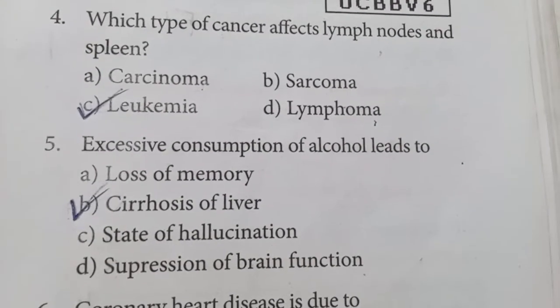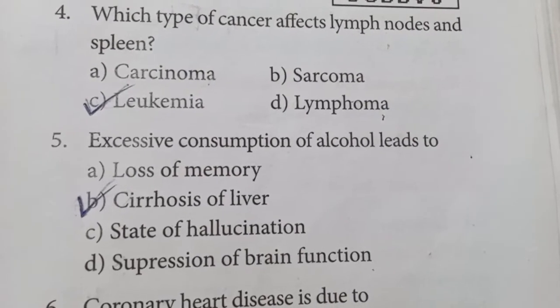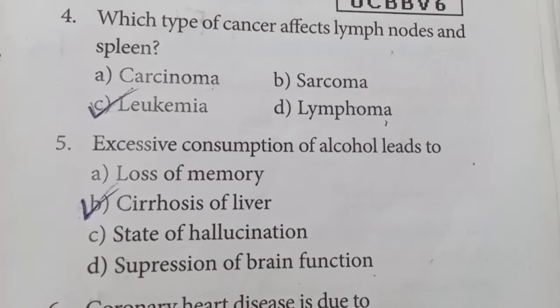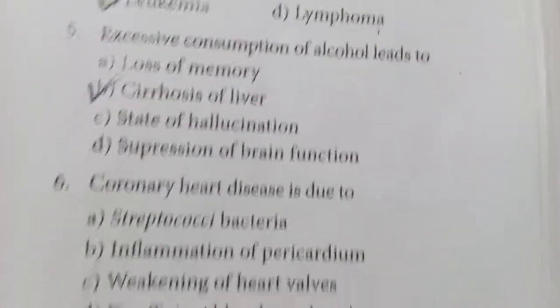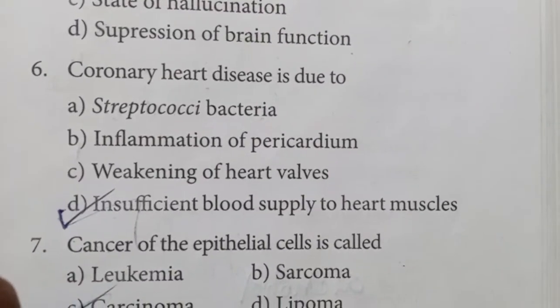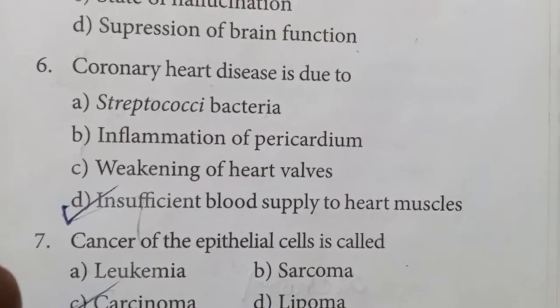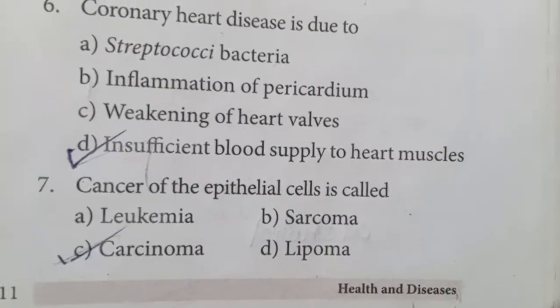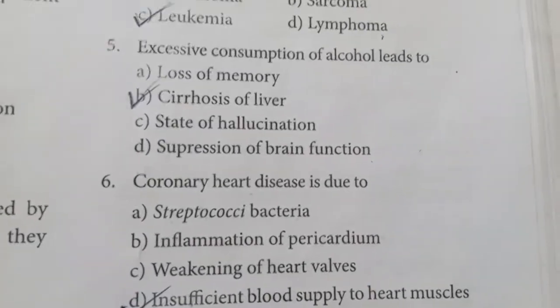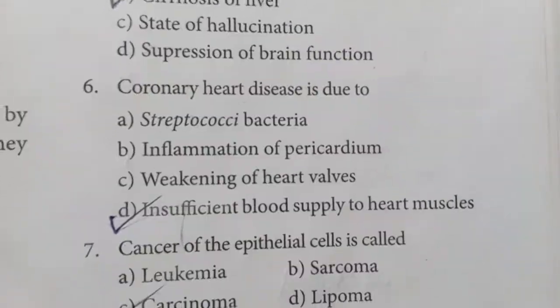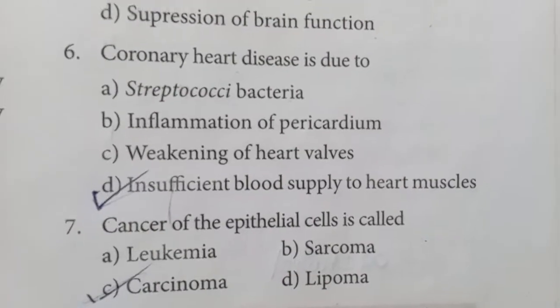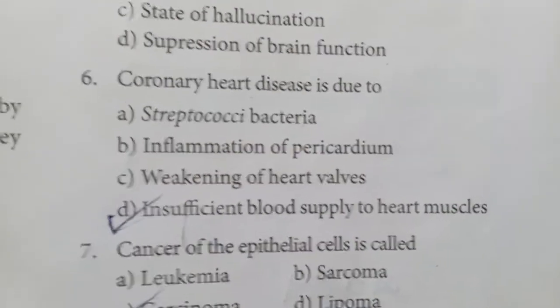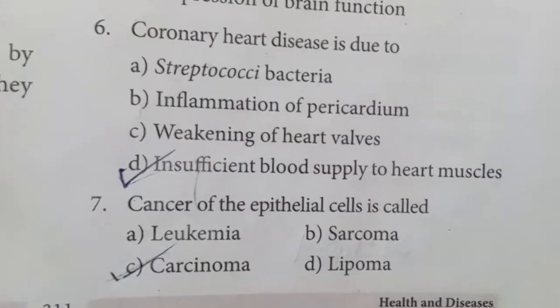Excessive consumption of alcohol leads to cirrhosis of the liver. Cirrhosis of the liver means there is a shrinkage of the liver. Coronary heart disease is due to insufficient blood supply to the heart muscles. Cancer of the epithelial cells is called carcinoma. Epithelial cells are the outermost layer of the body; when they are affected by cancer, that condition is known as carcinoma.